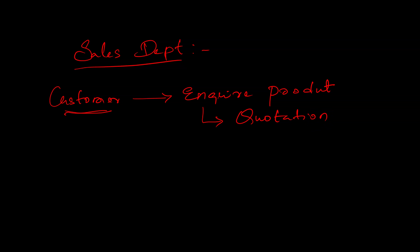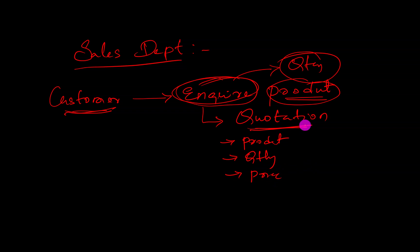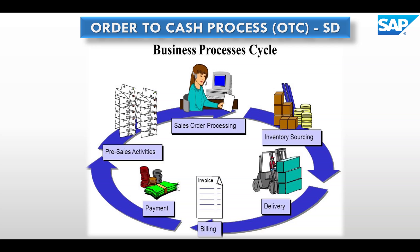First, we create an inquiry document capturing what products the customer has inquired about and what quantity they require. Based on the inquiry, the salesperson generates a quotation containing product details, quantity, and price. These two processes — inquiry and quotation — are called pre-sales activity.